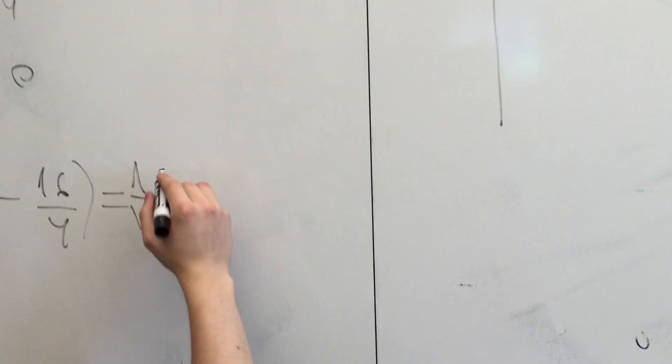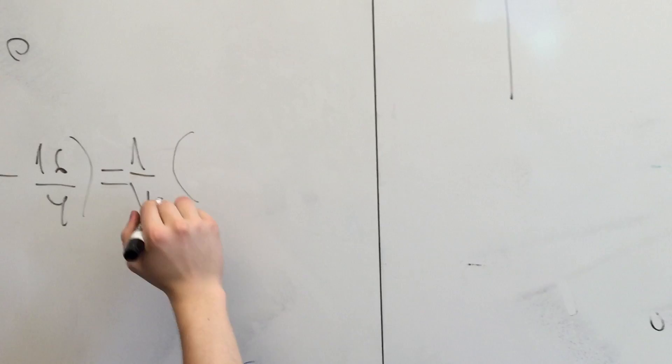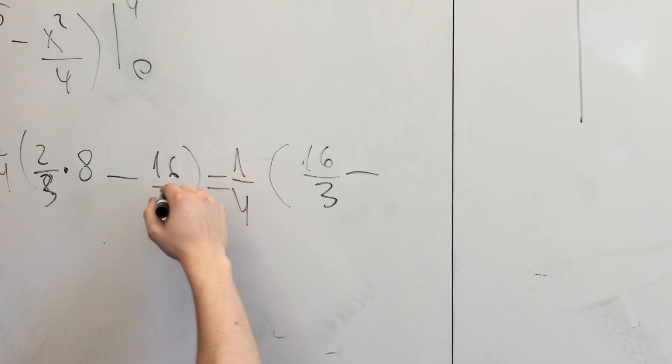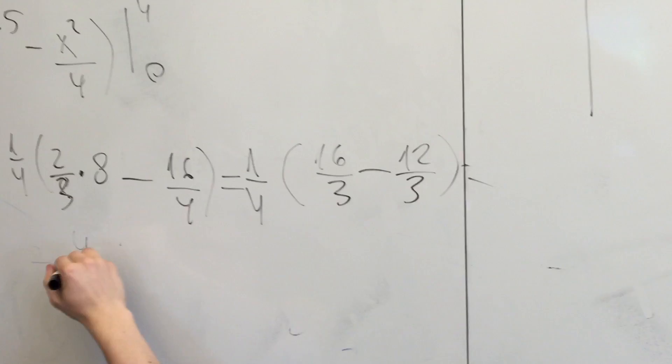Which is equal to (1/4) times 16/3 minus 12/3. So we get 4/3 times 1/4, which is 1/3. And f(0) equals 0.